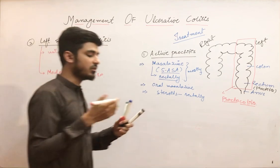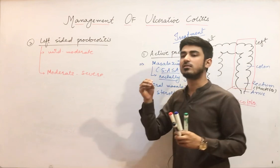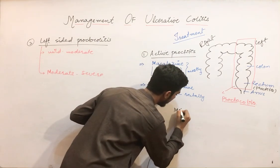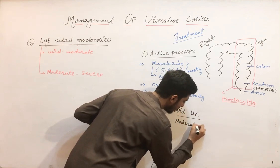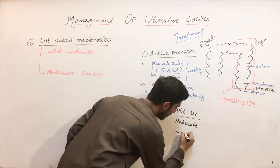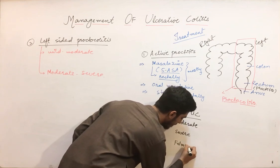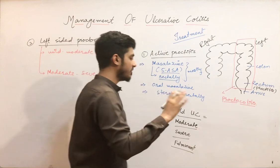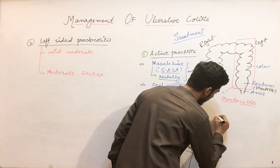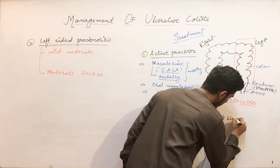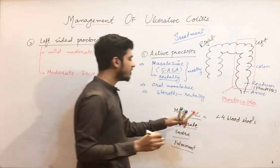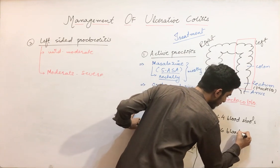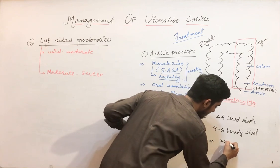The classification of mild, moderate, and severe ulcerative colitis is based on the number of bloody stools. Mild is less than four bloody stools per day. Moderate is four to six bloody stools. Severe is greater than six bloody stools.